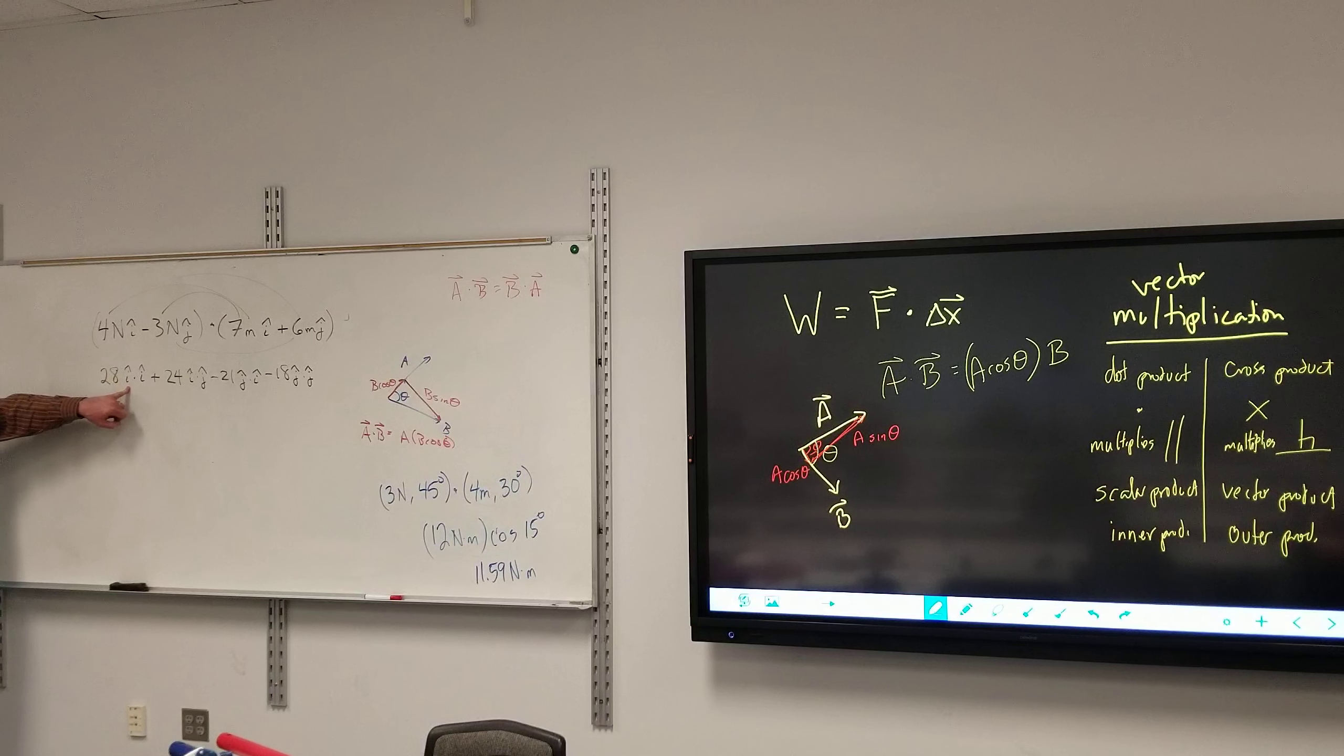I have two unit vectors here in the same direction. What is I hat dot I hat? I hat squared, but what does that equal? One. The magnitude of each, so that's one times one times the cosine of the angle between them. If I have two vectors that are identical, the angle between them is zero, and cosine of zero is one.